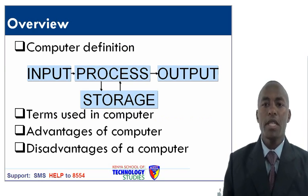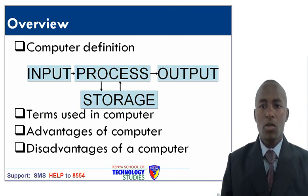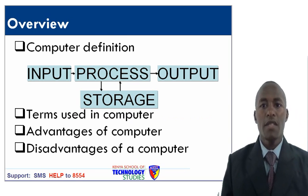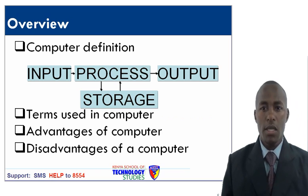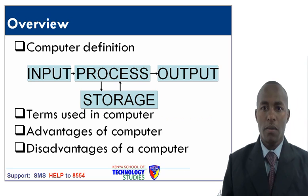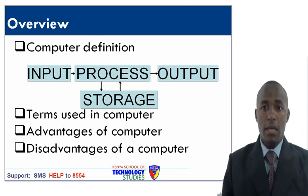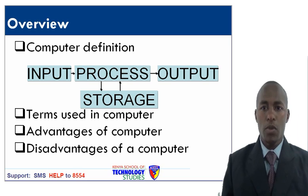Overview: computer definition. A computer is an automatic machine that works on a set of stored programs. Another definition: it is an electronic device that accepts input, processes and outputs information in the organization for decision making purposes. The three main basic activities of the computer are input, process and output.